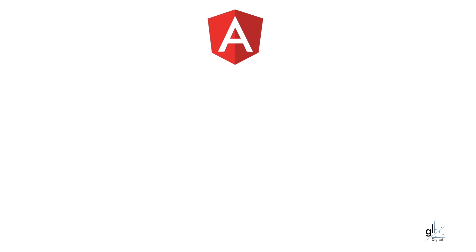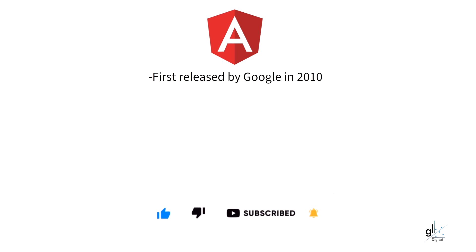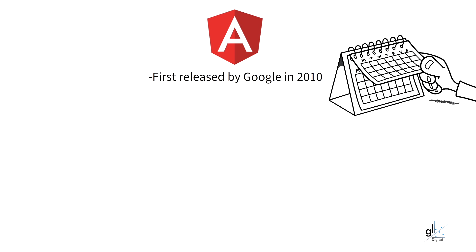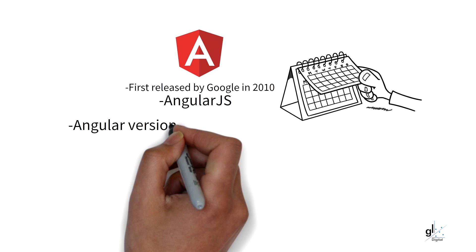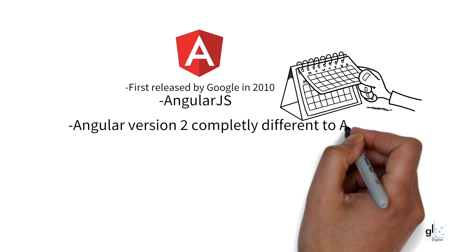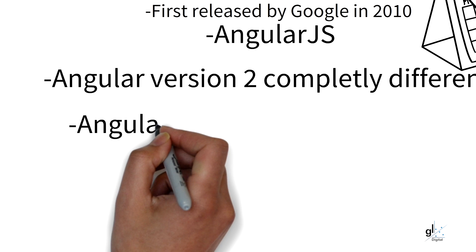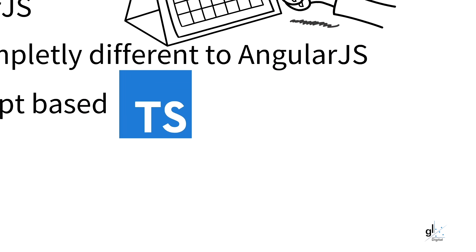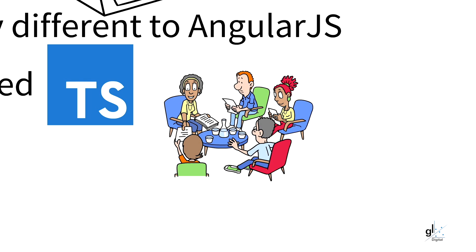Angular was first released in 2010 and was created by Google. The first version is called AngularJS. Angular version 2 was released on the 14th of September 2016 by Google. This was seen as a controversial release as it introduced drastic changes to the framework, so much so that when referring to Angular version 2 and onwards, the name Angular is now used, and AngularJS only refers to the first version. In this video, we are only interested in Angular and not AngularJS.